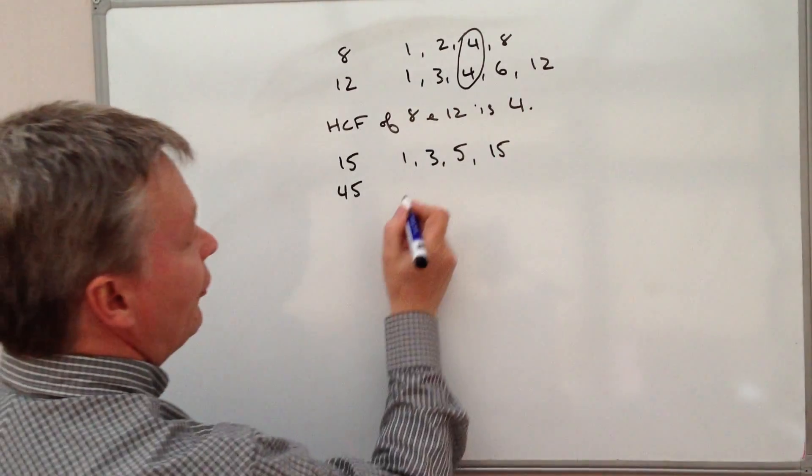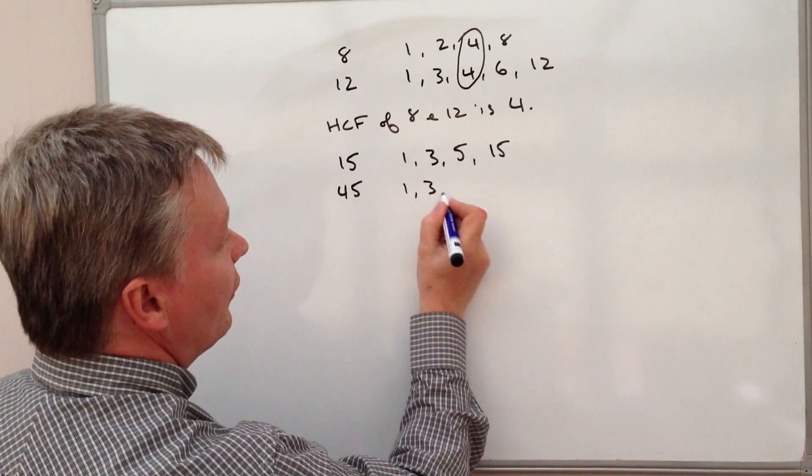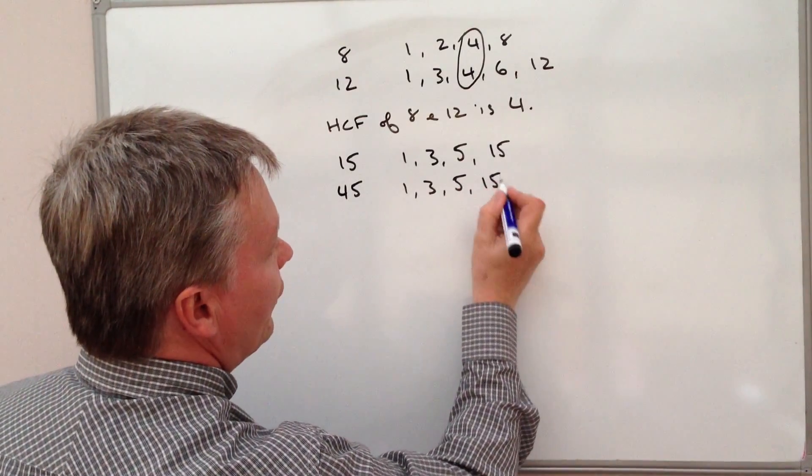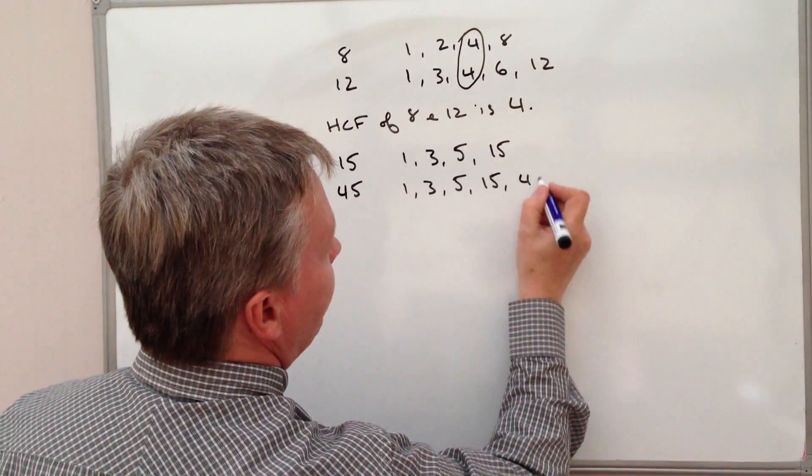The factors of 45 are 1, 3, 5, 15 and 45.